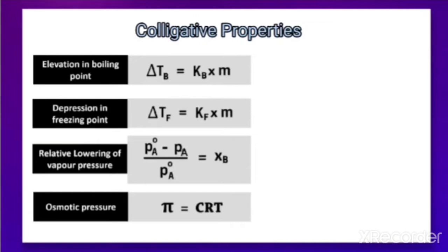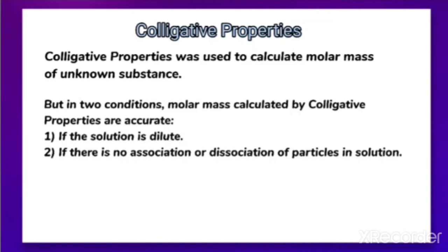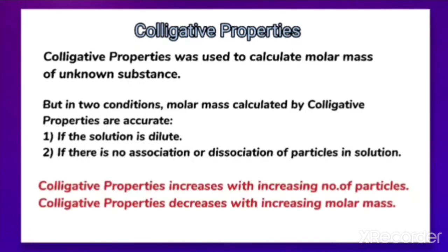Colligative properties are used to calculate the molar mass of unknown substances — that is, the molar mass of the solute. However, the molar mass calculated by colligative properties is accurate only in two conditions: if the solution is dilute, and if there is no association or dissociation of particles in the solution.